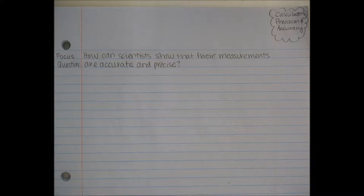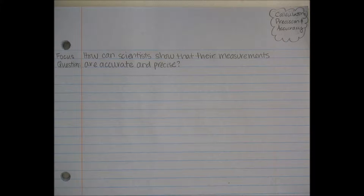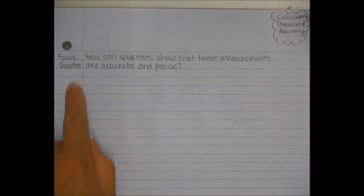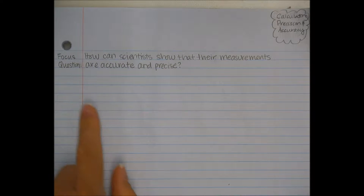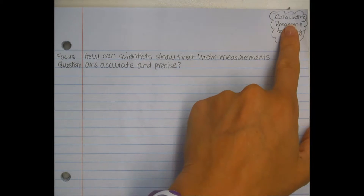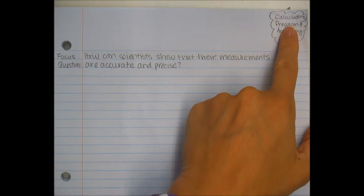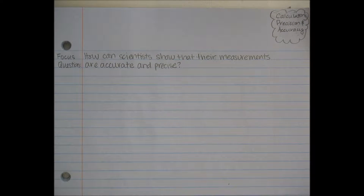Good morning. Today we are starting our next activity. Turn to your next blank page in your notebook — it should be a right-hand page. Make sure the spiral and the holes are along the left side of your notebook. At the very top of the page, you're writing the title for this activity, which is Calculating Precision and Accuracy, and write today's date as well.